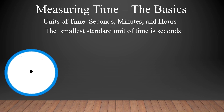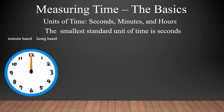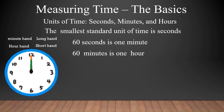The smallest standard unit of time is seconds. You can make an analog clock using cardboard — write the numbers in clockwise direction. You have one minute hand, which is the long hand, and one hour hand, which is the short hand. The green one is the short hand. 60 seconds is 1 minute, 60 minutes is 1 hour, and 24 hours is 1 full day.